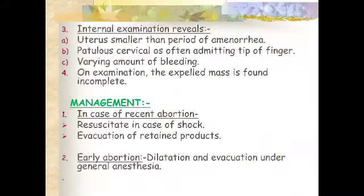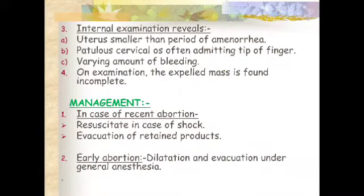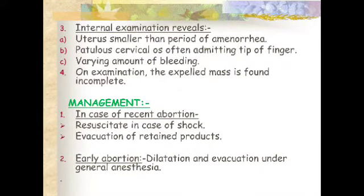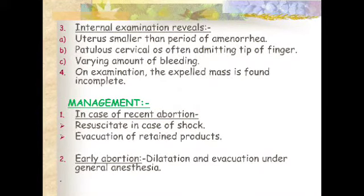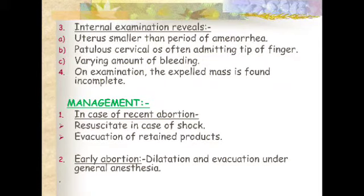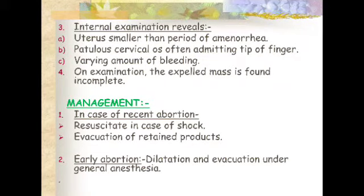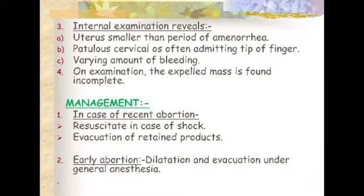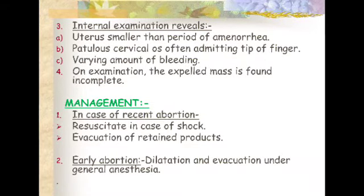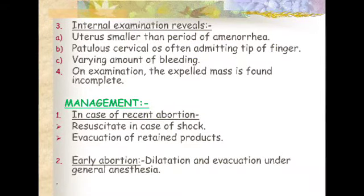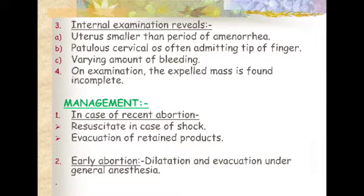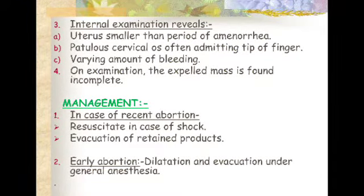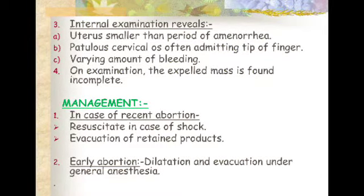Internal examination reveals the uterus smaller than the period of amenorrhea. The patulous cervical os is often admitting the tip of a finger. There is a varying amount of bleeding on examination.